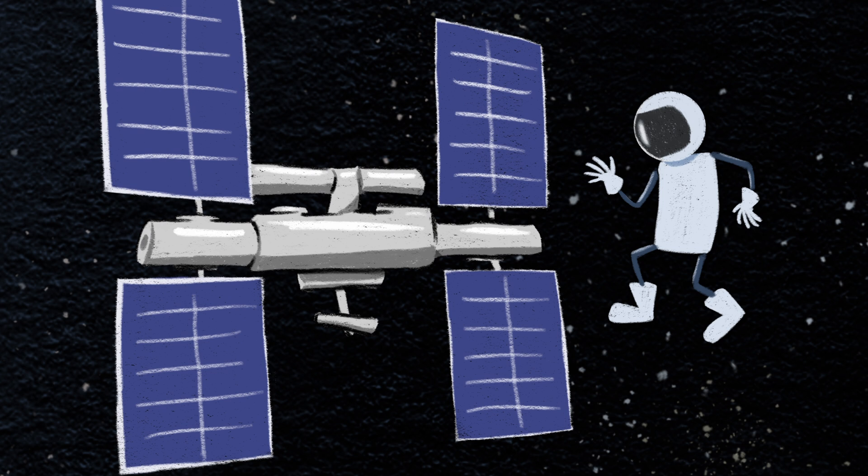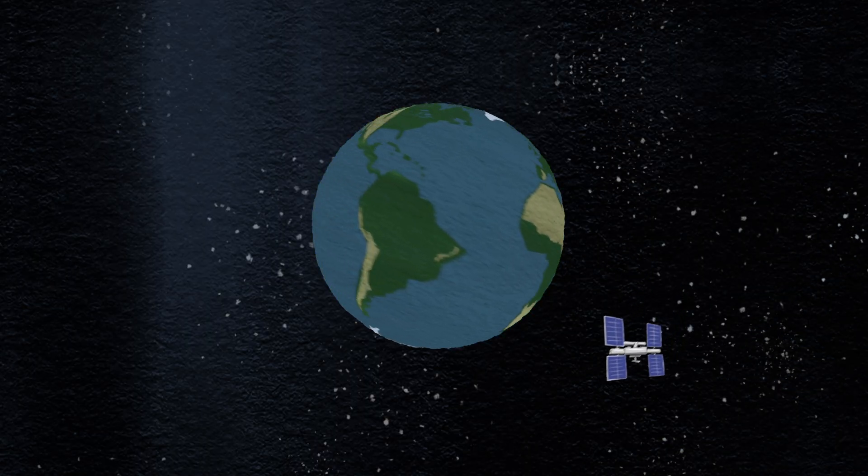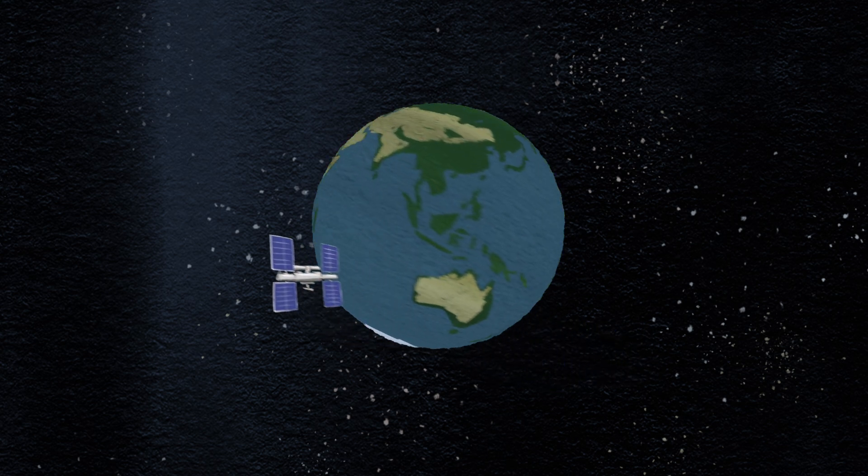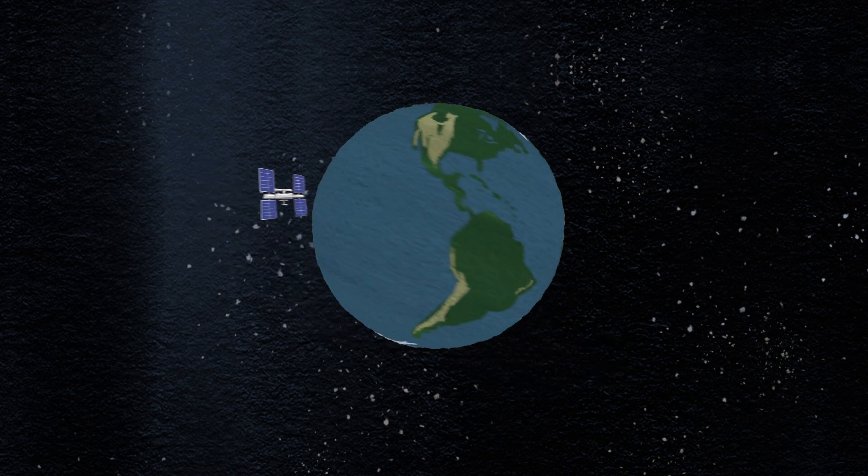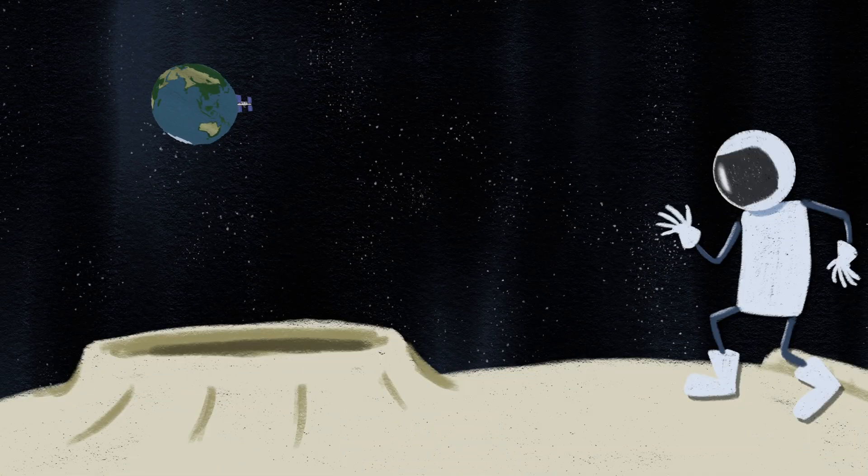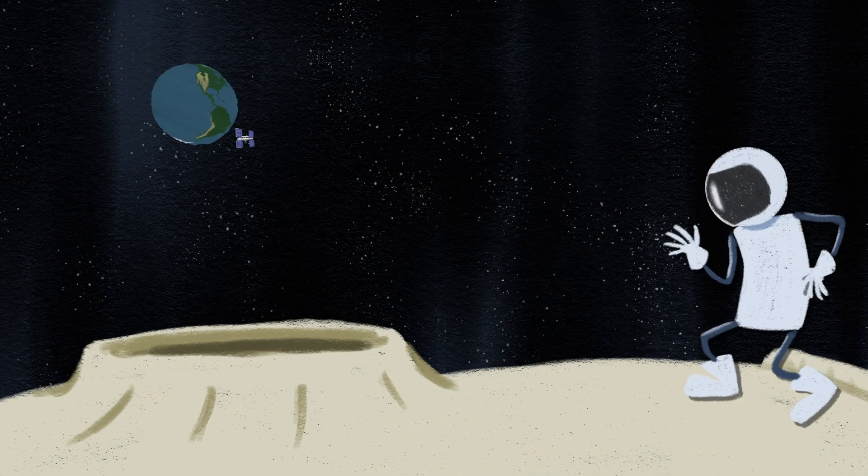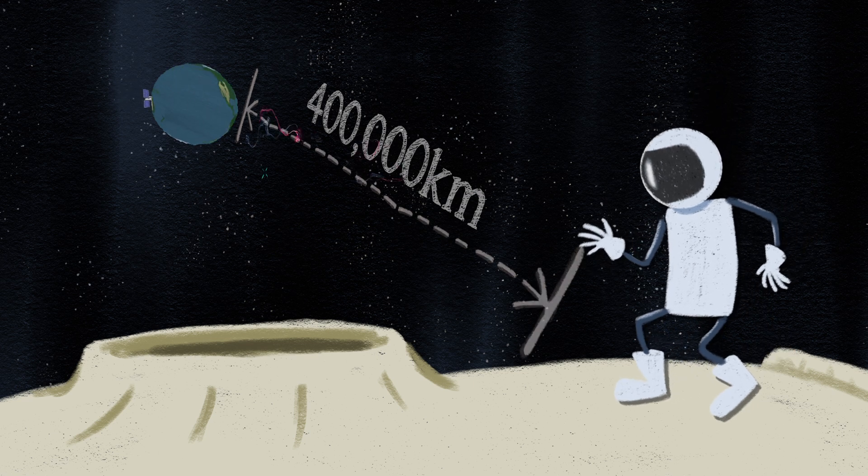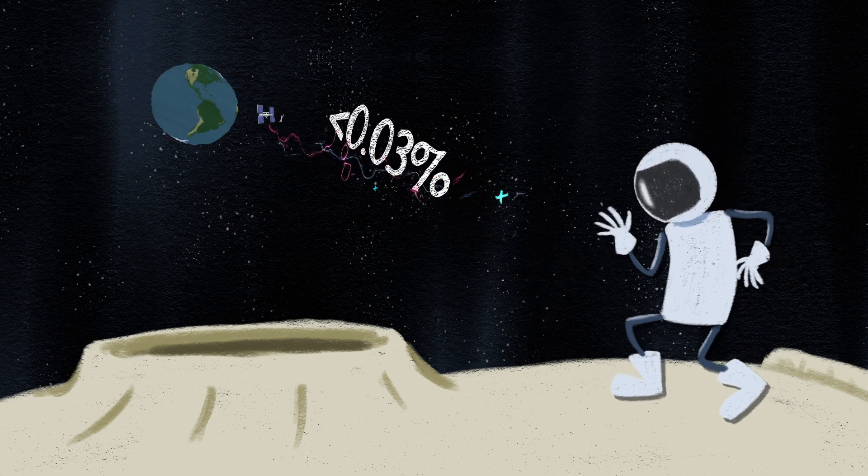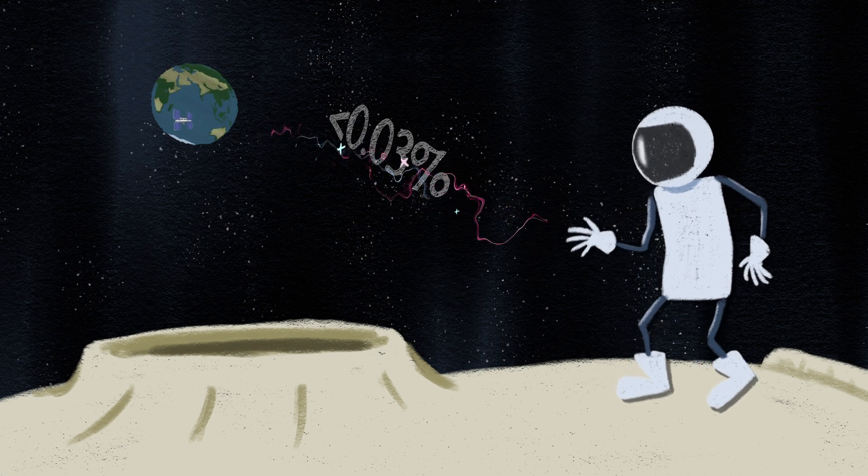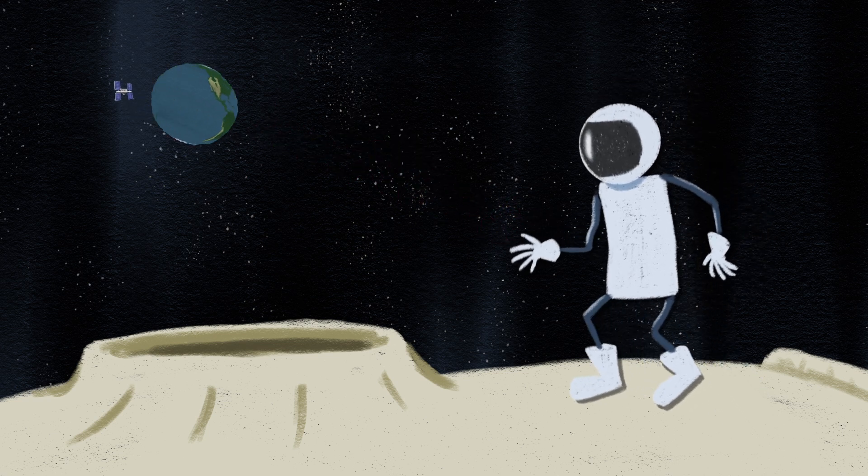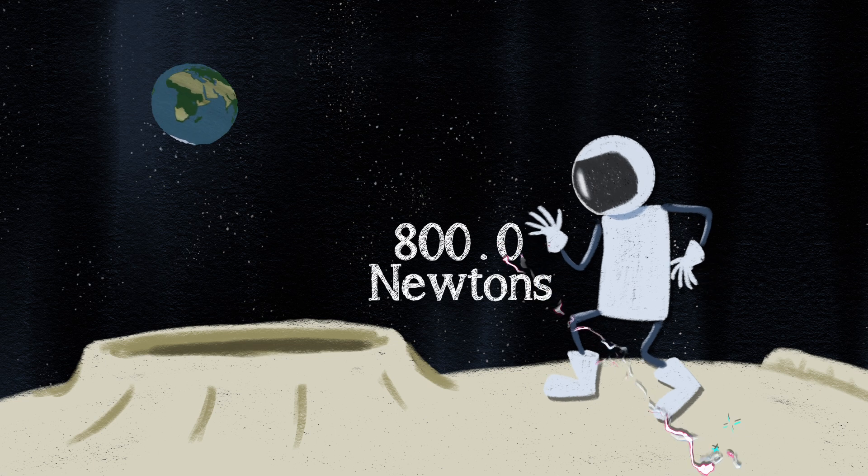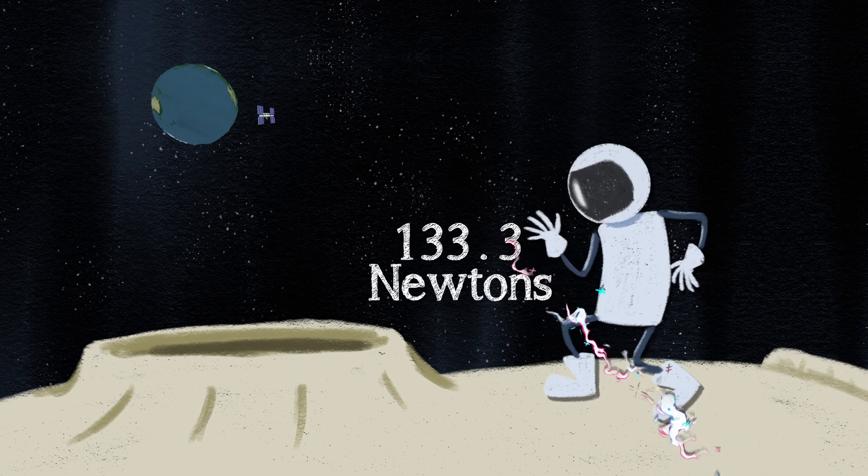Astronauts just experience weightlessness because the space station is constantly falling towards Earth. Fortunately, it's orbiting the planet fast enough that it never hits the ground. By the time you made it to the surface of the Moon, around 400,000 kilometers away, Earth's gravitational pull would be less than 0.03% of what you feel on Earth. The only gravity you'd be aware of would be the Moon's, which is about one-sixth as strong as the Earth's.